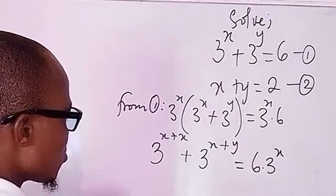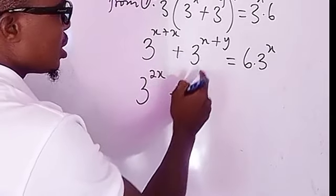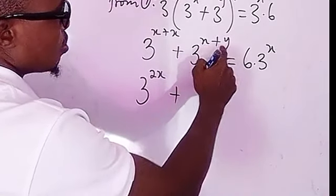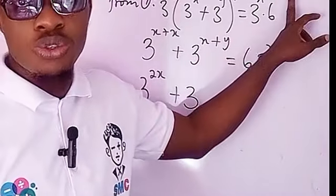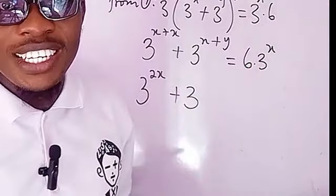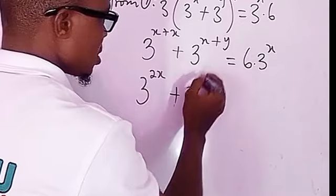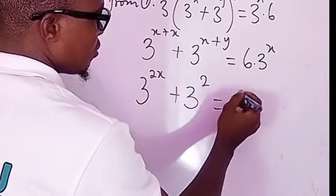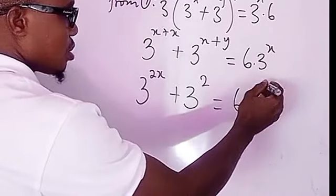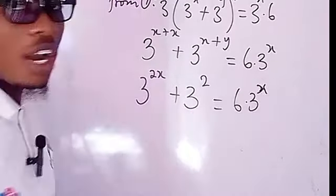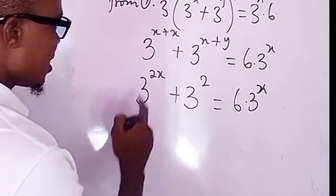So we have three to the power of two x, plus three to the power of x plus y. Now looking at x plus y and looking at equation two — equation two states that x plus y equals two — so we are going to replace x plus y with two. Then we have six times three to the power of x.